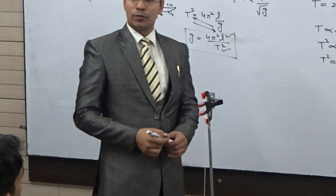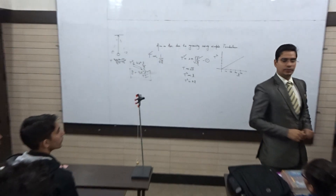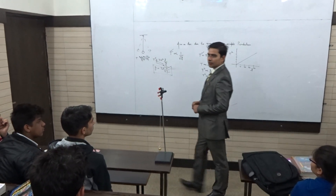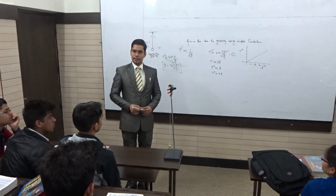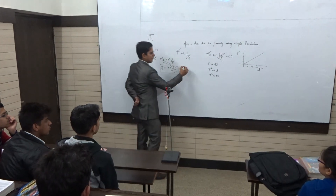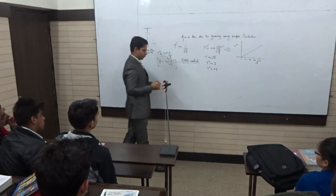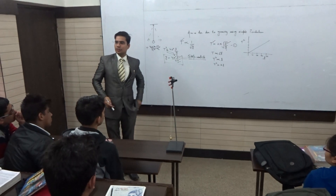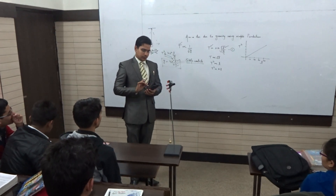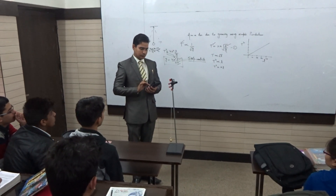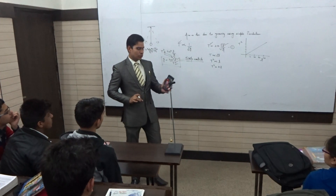We cannot accurately calculate the time period of a single oscillation. Instead, we measure the time for 10, 15, or 20 oscillations as per convenience, using a stopwatch. I am going to use a digital stopwatch here, though you can use any stopwatch — including one on your cell phone.